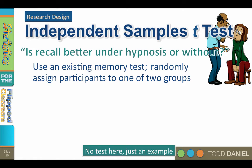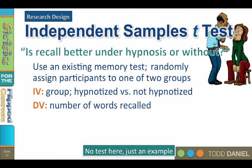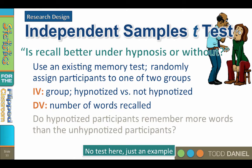Then we randomly select a group of participants. We randomly assign those participants to one of two conditions. Some will be under hypnosis, others not under hypnosis. Our independent variable is the condition, hypnotized versus not hypnotized. Our dependent variable is memory, the number of words recalled. If the means of these two groups differ, we can measure how hypnosis affects memory. Do hypnotized participants remember more words than the unhypnotized participants.